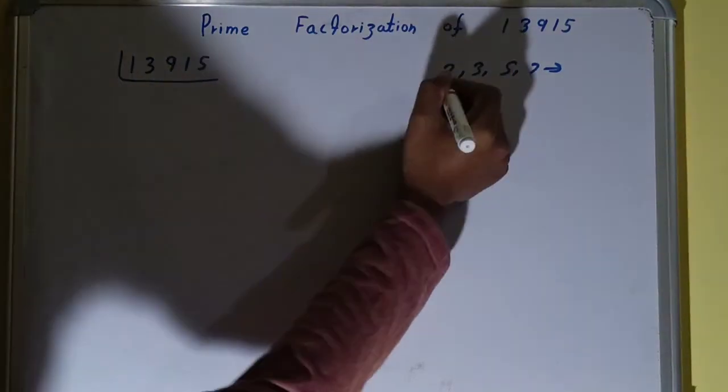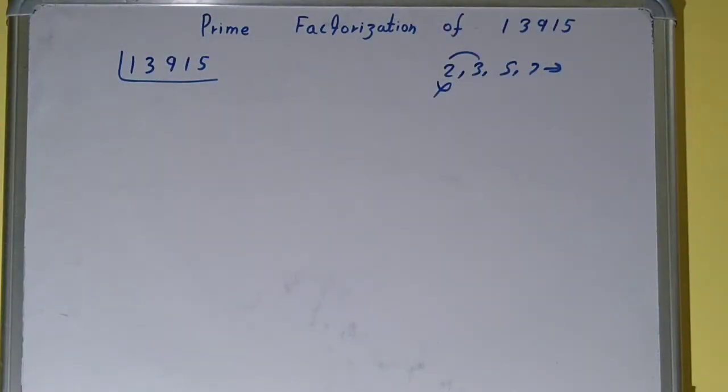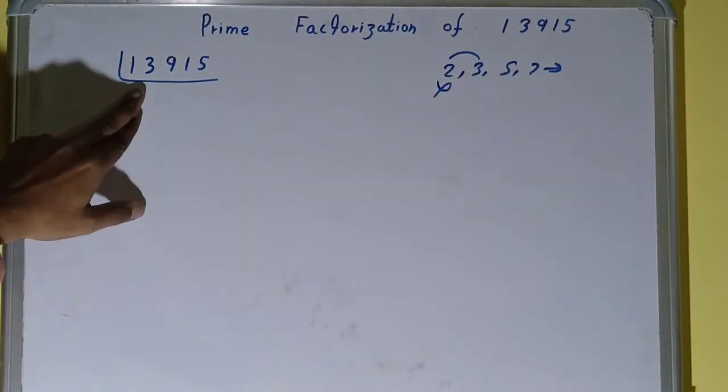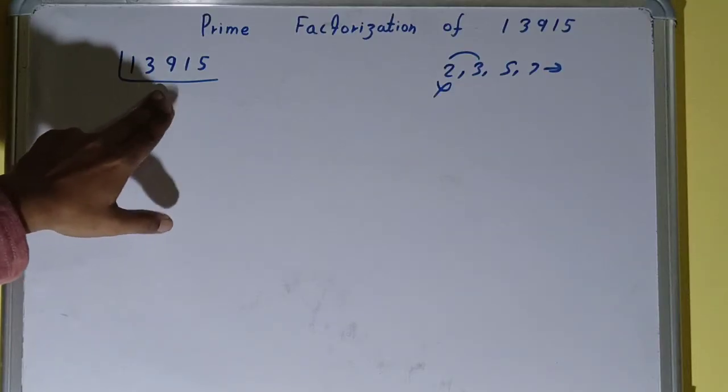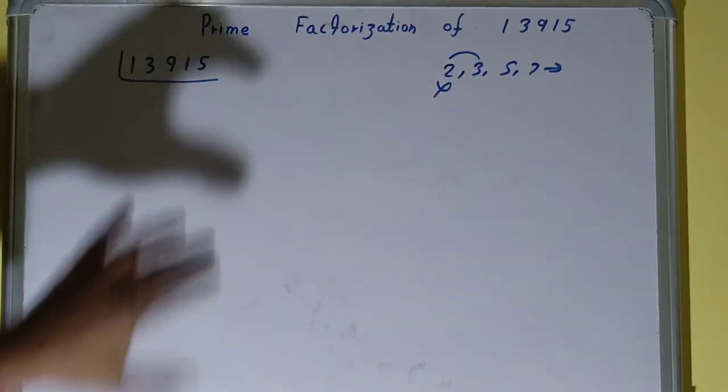So we'll be going to the next lowest prime number, that is 3. Is it divisible by 3? No, it is not divisible by 3.